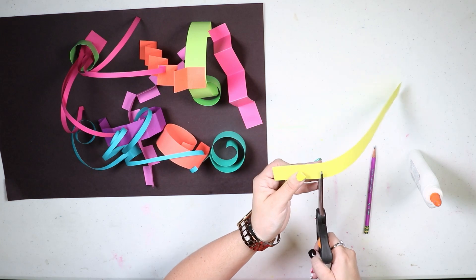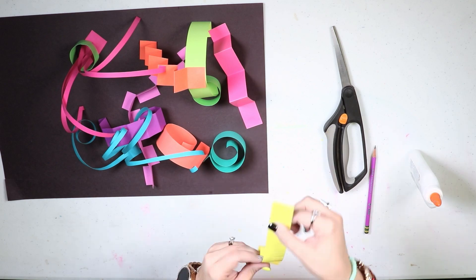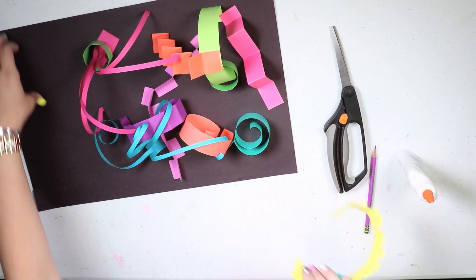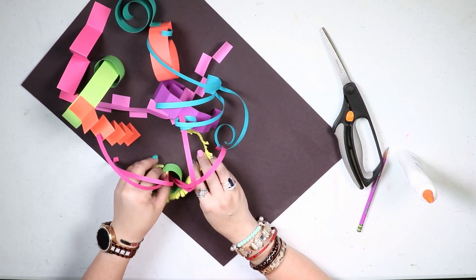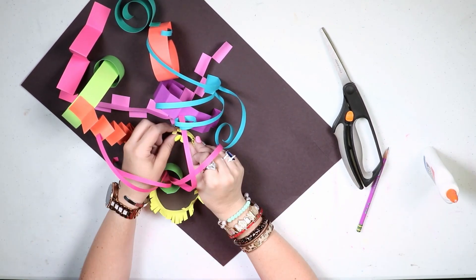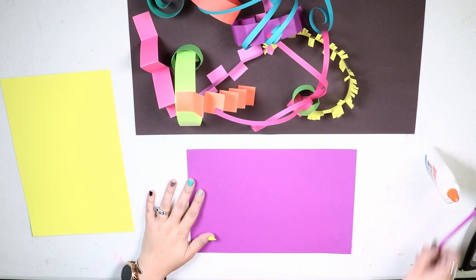This one I did the same as drawing the line down the middle and doing squares but I did little tiny pieces, rolled it into a spiral, and then as I put it on my page I pushed the pieces down that I cut so it looks like fringe. That's a great texture to add to your paper sculpture.